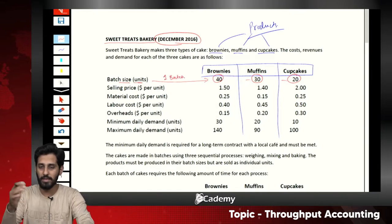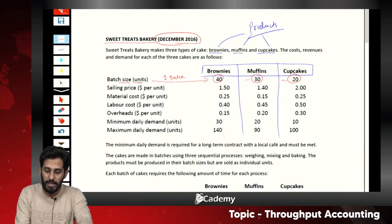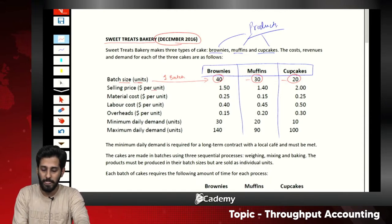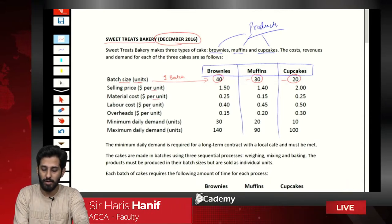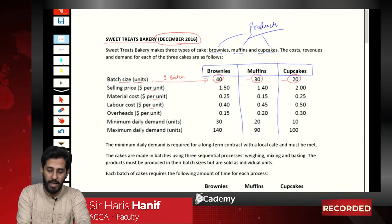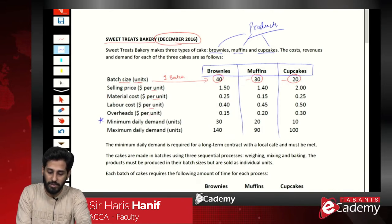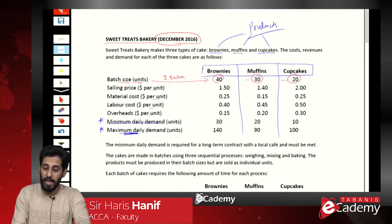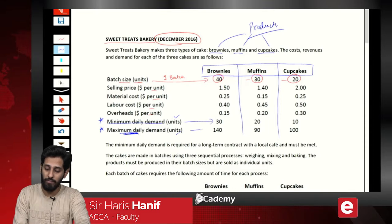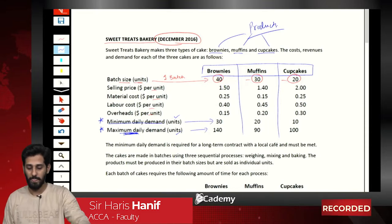The question provides selling price per unit, material cost per unit, labor cost per unit, and overheads per unit. There is also a minimum demand and a maximum demand, both given in units.